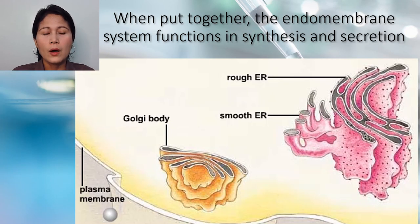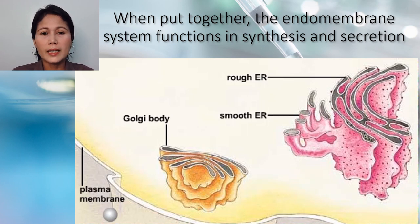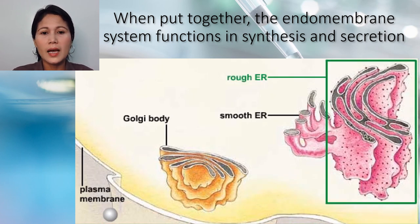When put together, the endomembrane system functions in synthesis and secretion. A protein is synthesized in the rough endoplasmic reticulum and enters the interior.